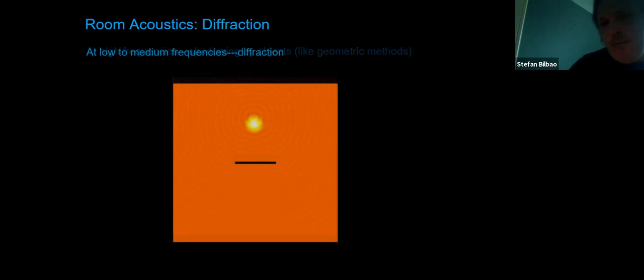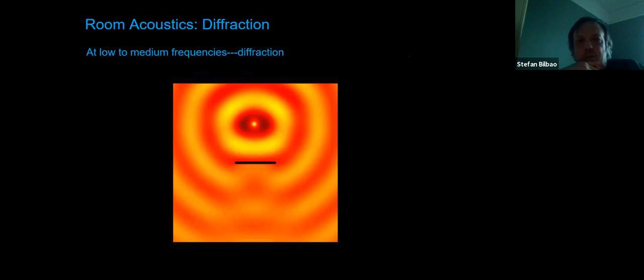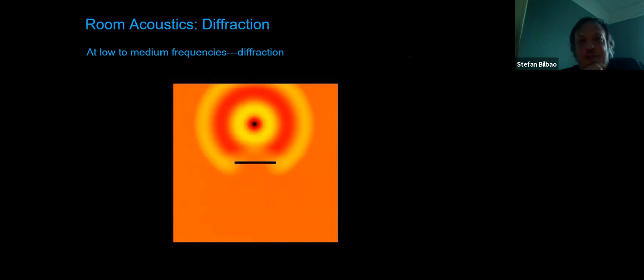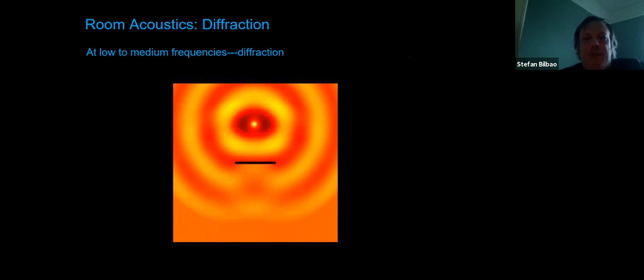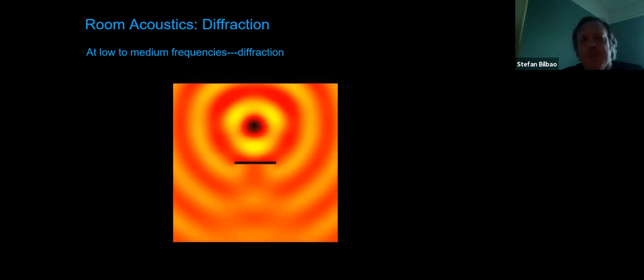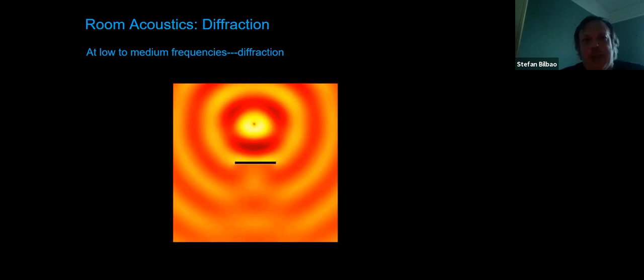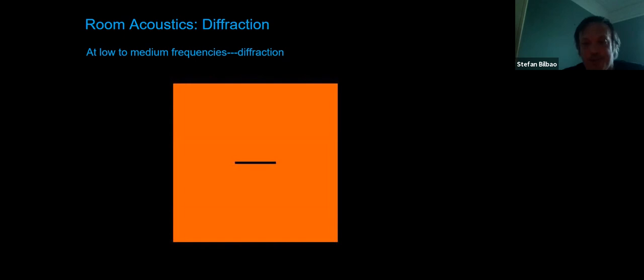The wavelengths corresponding to the range of human hearing run from about two centimeters up to about 17 meters, so for the most part they're larger than the obstacles in the space. We're mostly in a regime where we have to deal with diffraction, so the geometric approximation is really not good at all. Our group and others are therefore trying to do full 3D models of wave propagation in relatively complex acoustic spaces like a full concert hall.